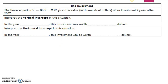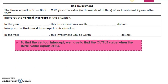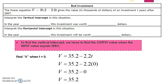Now let's interpret the vertical intercept. To find the vertical intercept, we have to find the output value when the input value equals zero. This means we have to find v when t equals zero. So first, I write down my equation, then I'm going to replace my input value, or my t value, with zero. So I have v equals 35.2 minus 2.2 times zero.